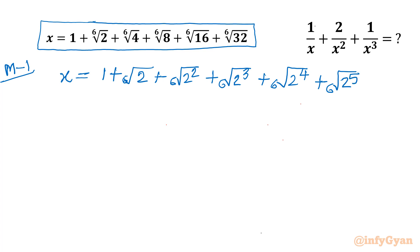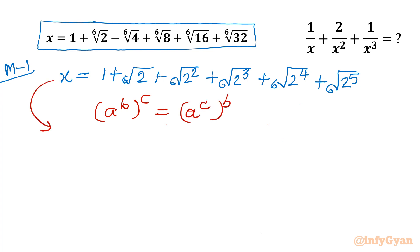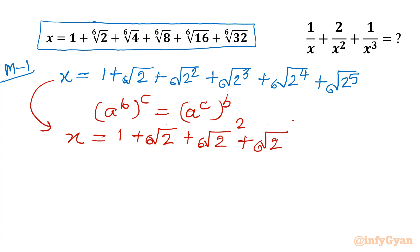Now I will use a powerful exponent property: a to the power b, whole to the power c, can be written as a to the power c, whole to the power b. So our expression becomes x equal to 1 plus 6th root of 2, plus 6th root of 2 whole squared, then 6th root of 2 whole cubed, 6th root of 2 whole to the power 4, and 6th root of 2 whole to the power 5.